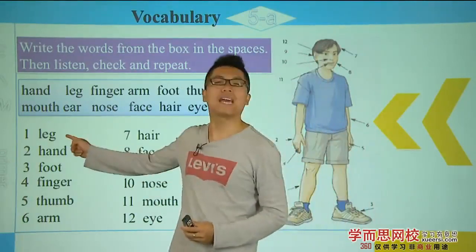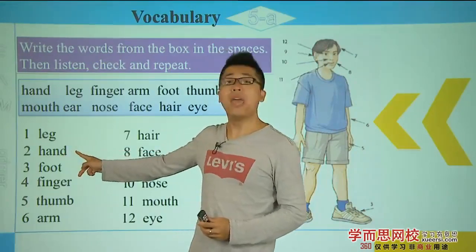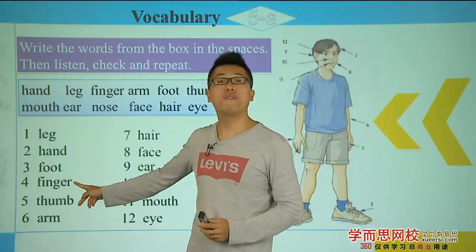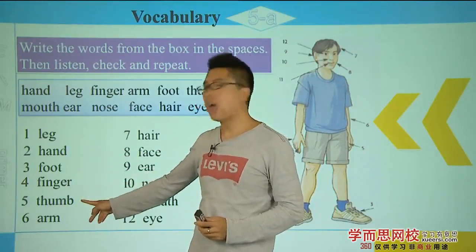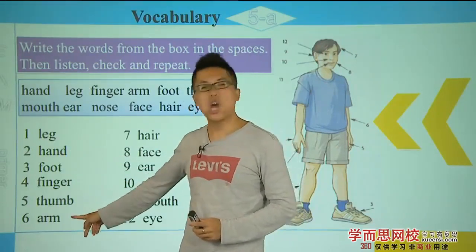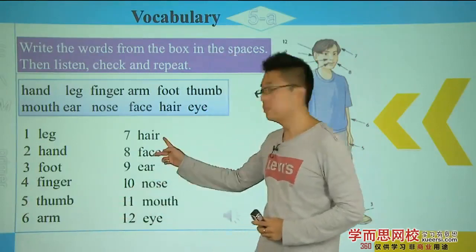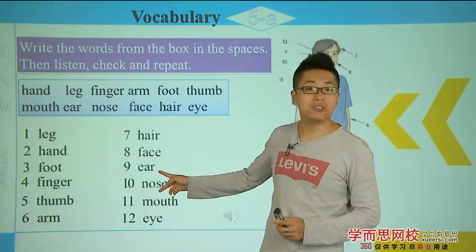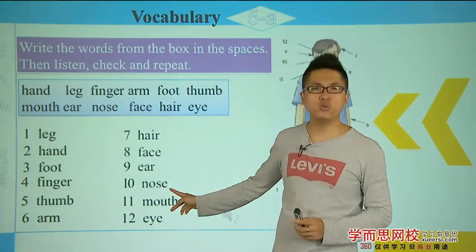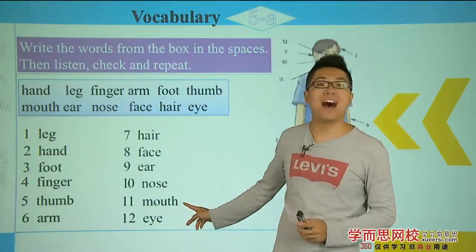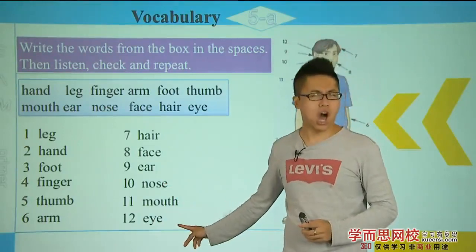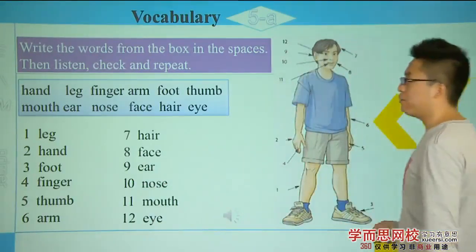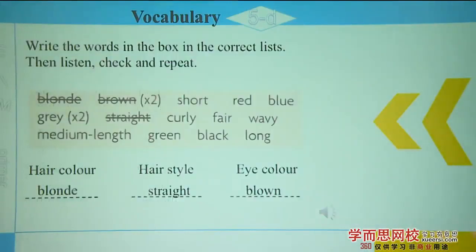Last time — let's read them all again. Leg, hand, foot, finger, thumb, arm, hair, face, ear, nose, mouth, eye. So we've learned different colors and the different parts of the body.